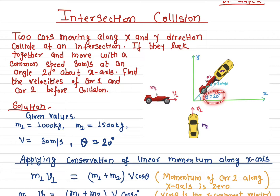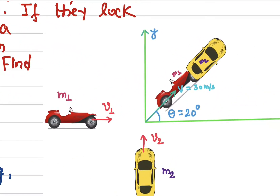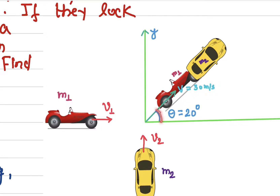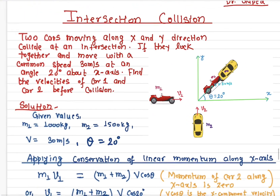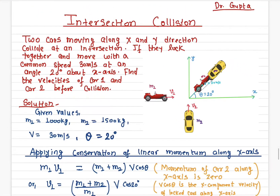After the collision the two cars are locked together and move with a common speed of 30 meters per second at a direction of 20 degrees. From this information we need to find out what is the speed of car one and what is the speed of car two.